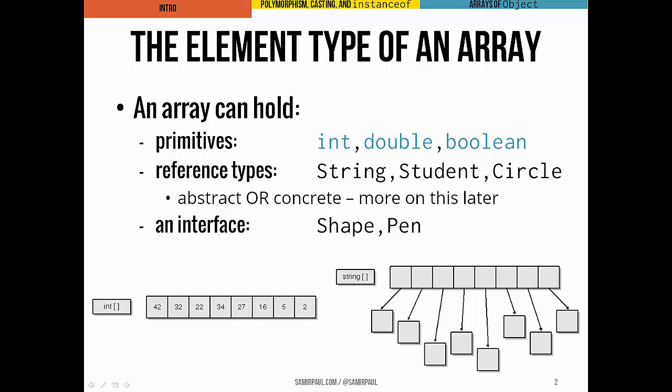Now an array, just to remind you, can hold either primitive types like ints, booleans, doubles - you can see that example on the left here, this is an array of ints. It can also hold reference types like a string or a student or a circle. This may not mean anything to you right now, but that can mean abstract or concrete references. This example here - we'll talk about abstract references next lecture, most likely. It can also hold interface types like shape or pen.